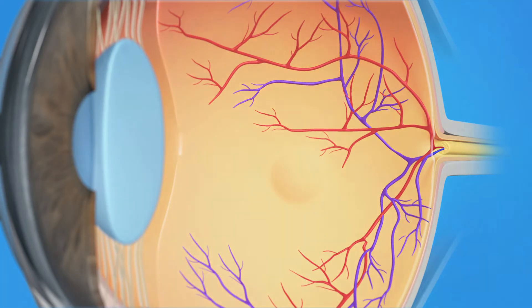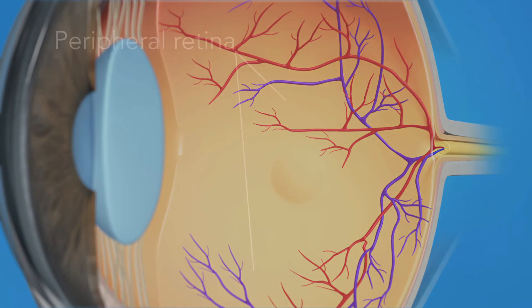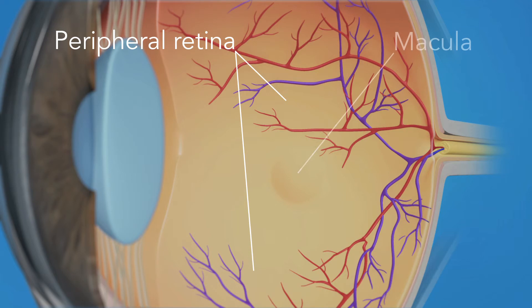The retina has two areas: the peripheral retina, which gives us our side or wide-angle vision, and the macula, the small area at the center of the retina. The macula gives us our pinpoint vision, allowing us to see detail clearly.